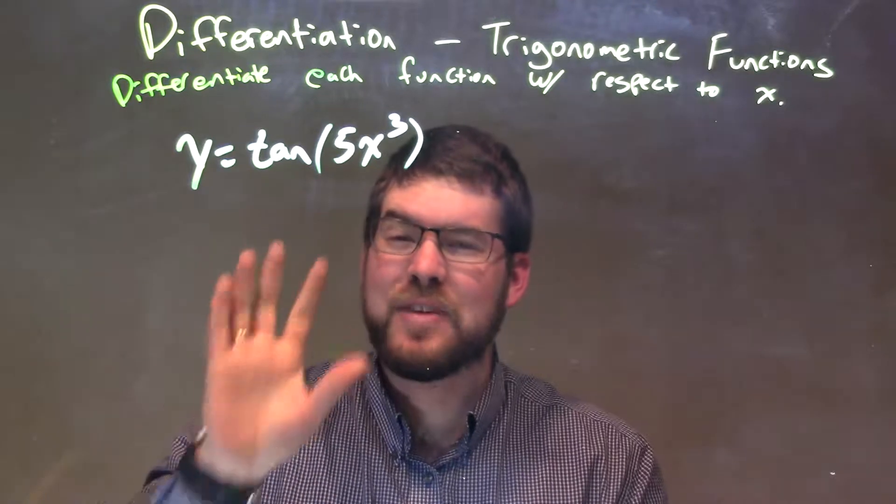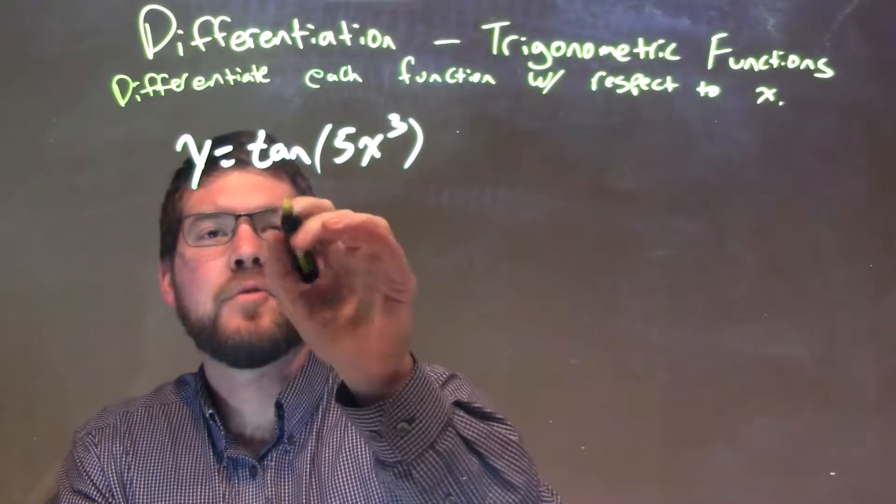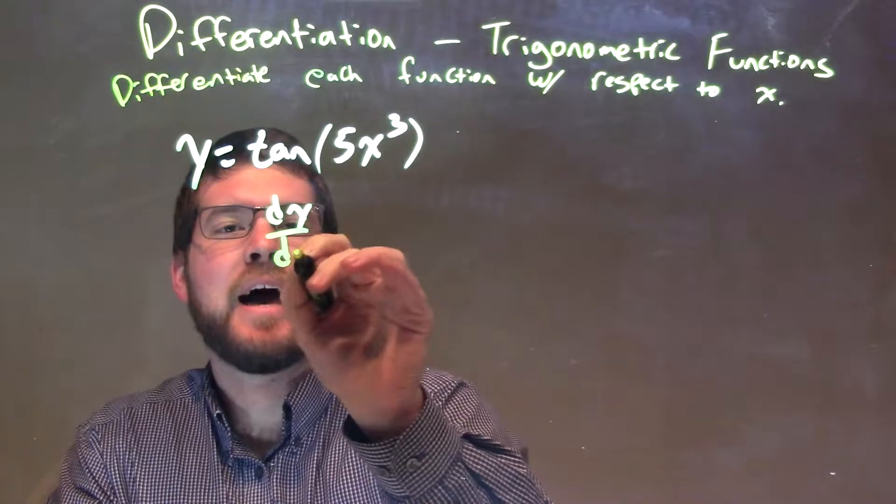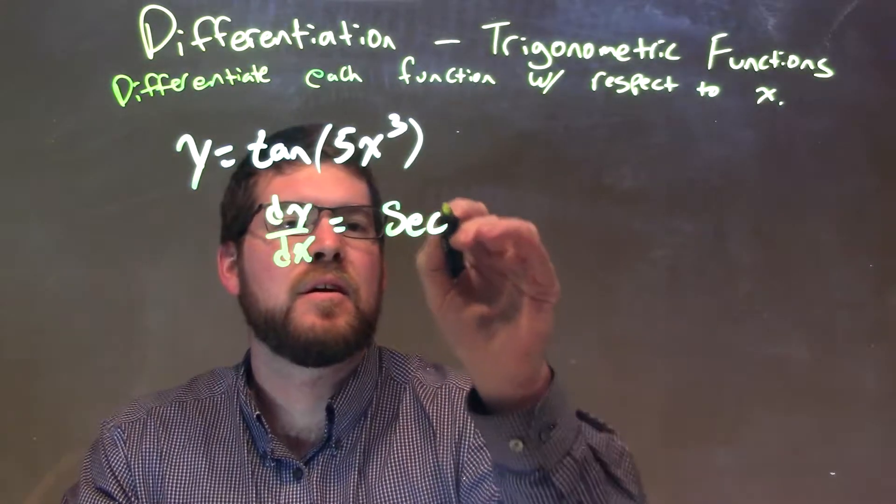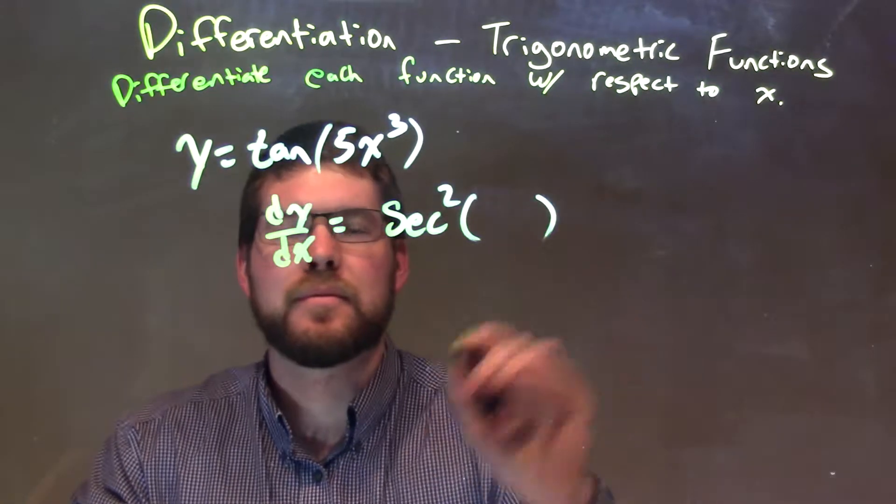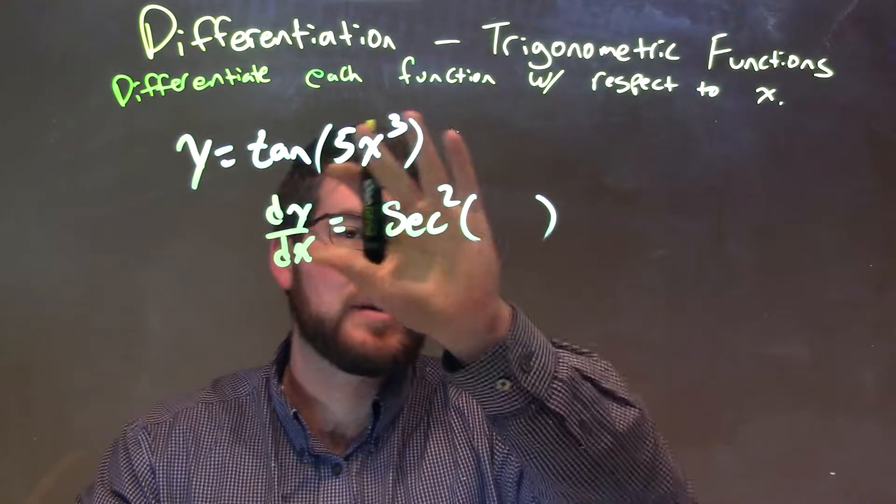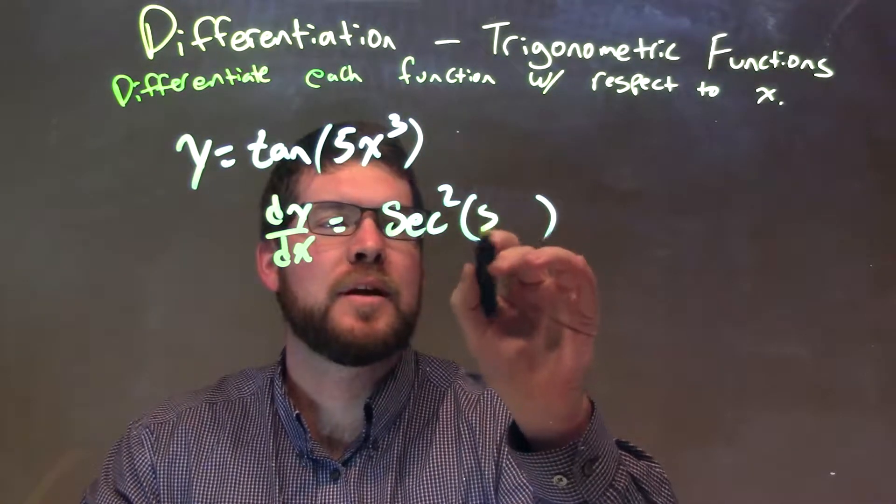So the derivative of tangent is secant squared. I want to take a derivative here, so dy/dx equals secant squared of whatever I'm taking it of. In this case, we're going to bring 5x to the third and put it inside.